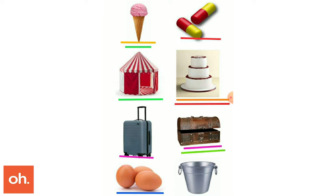Next, we will require the formula 2(lb + bh + hl) to find the surface area of the suitcase and the chest, since they are made up of cuboids. Lastly, for the bucket and the cake, we will require two or more radii to calculate the volume.